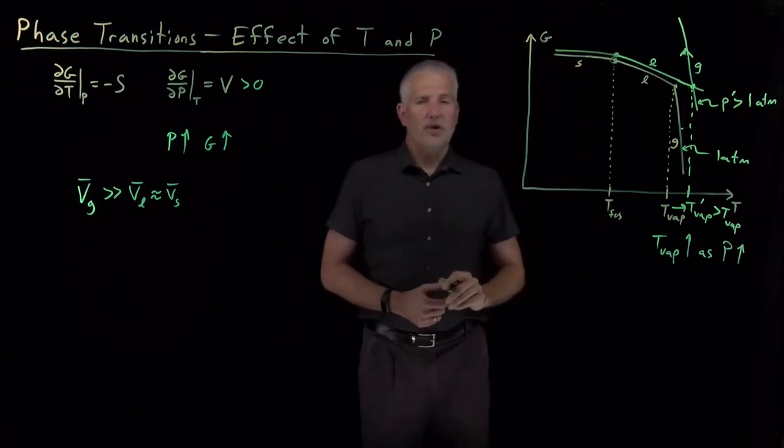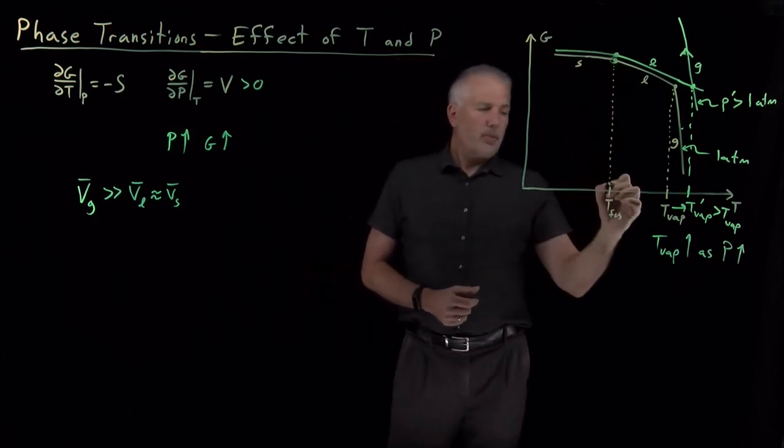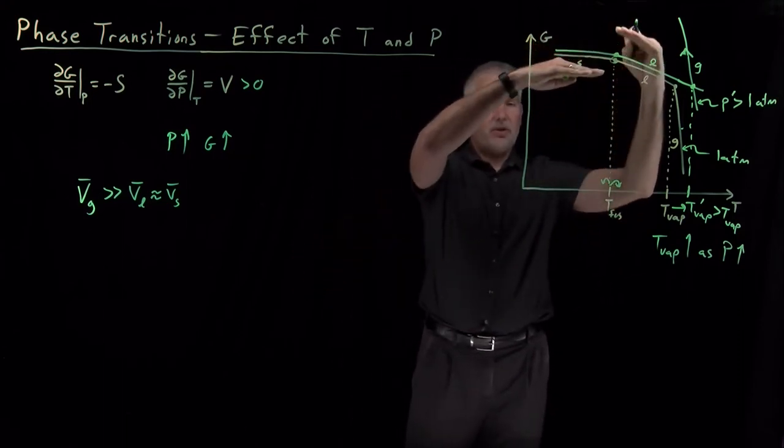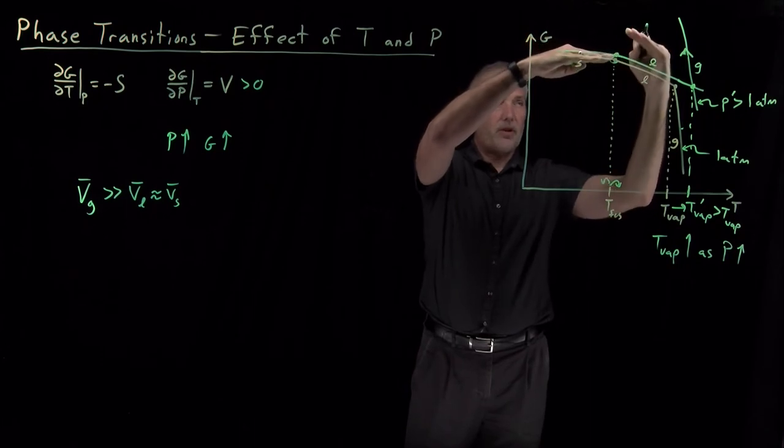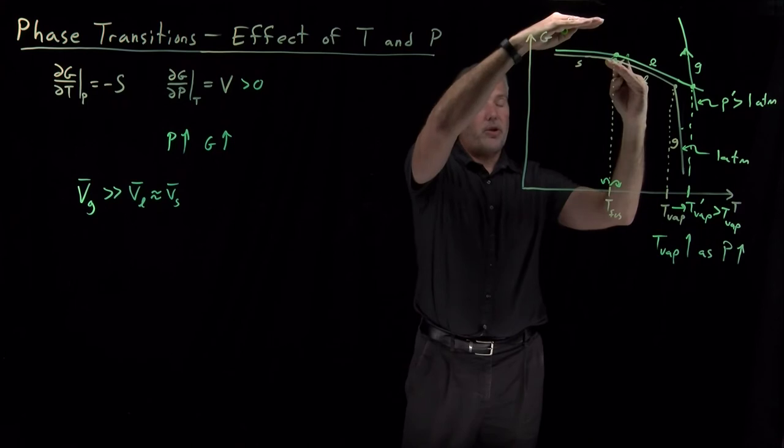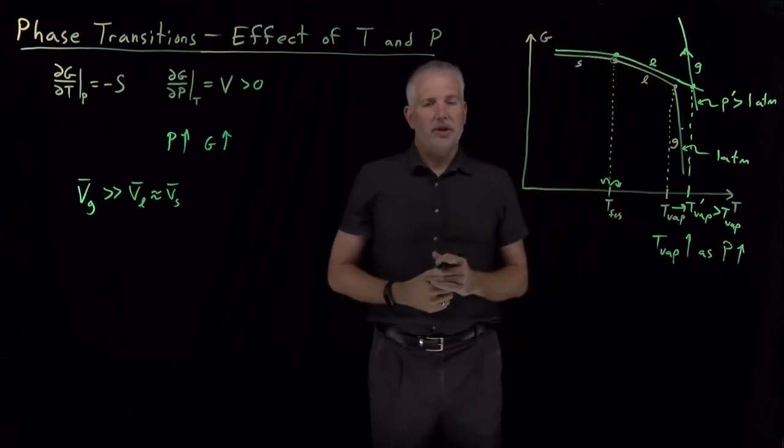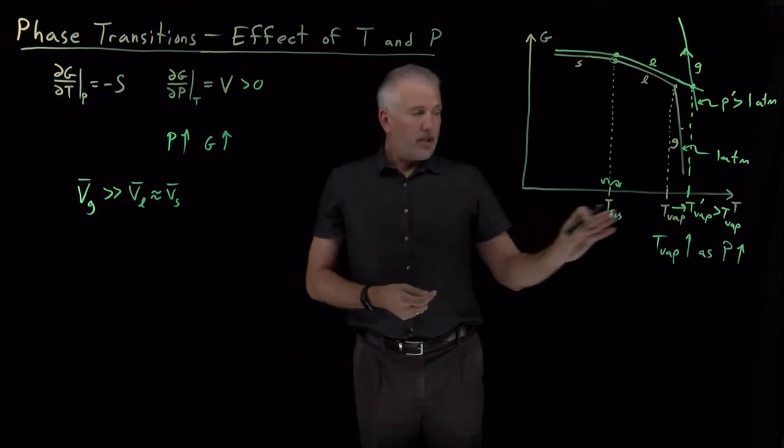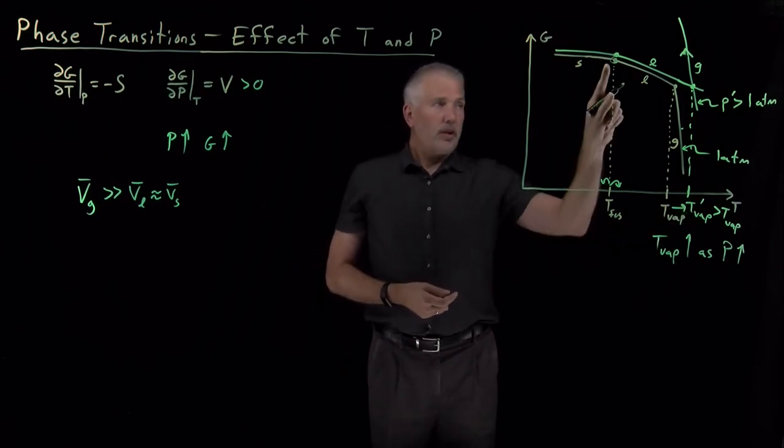So those curves are going to cross at some different point. The melting point might shift upwards or might shift downwards depending on which of these two curves increases by more. If one curve increases by more than the other, it'll shift the melting point in one direction. If the other curve increases by more, it'll shift in the other direction. So we can't say as a blanket statement like we can for boiling whether the melting point is going to always increase or always decrease.